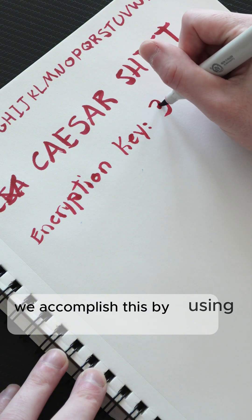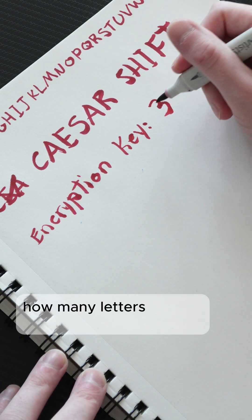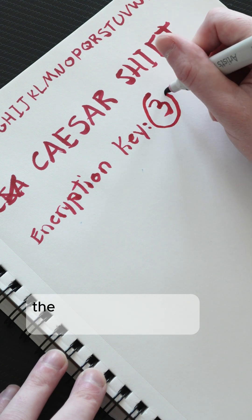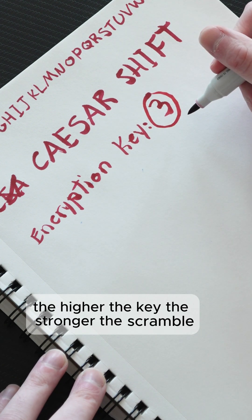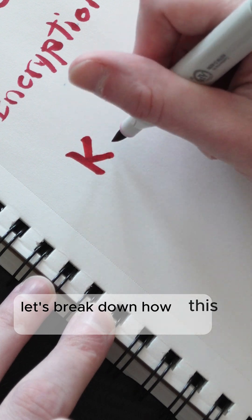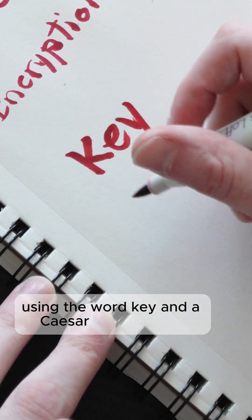We accomplish this by using a number that tells us how many letters to shift forward in the alphabet. The higher the key, the stronger the scramble. Let's break down how this works using the word key and a Caesar shift of three.